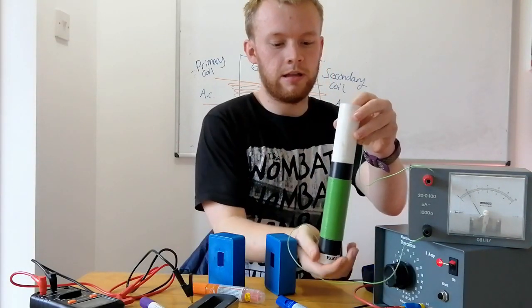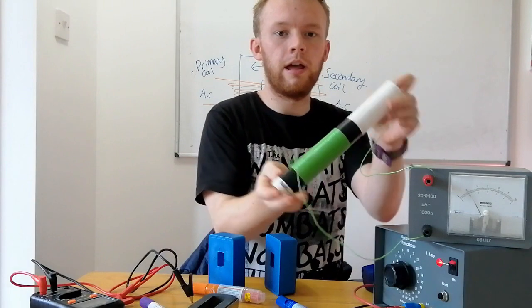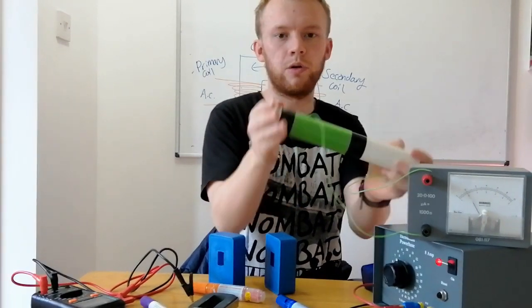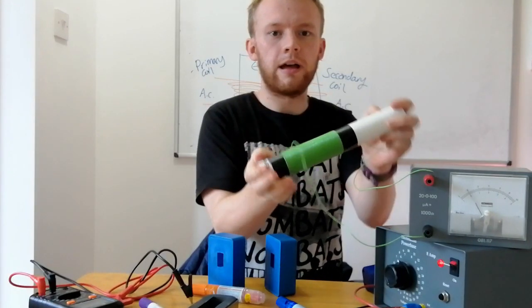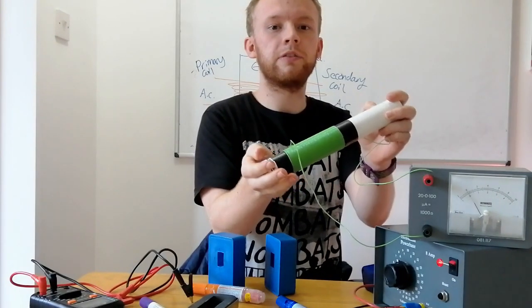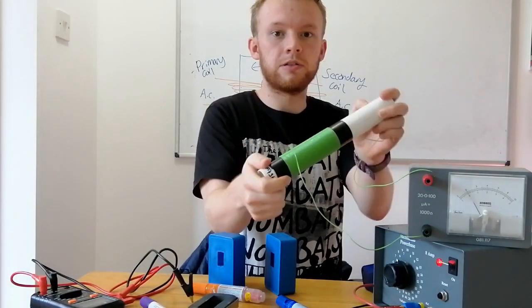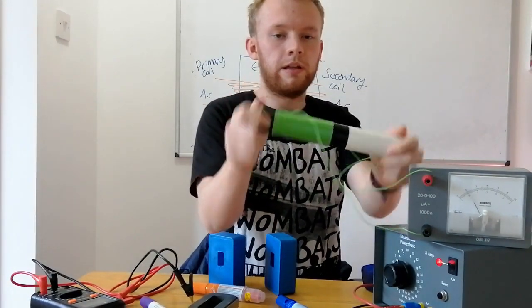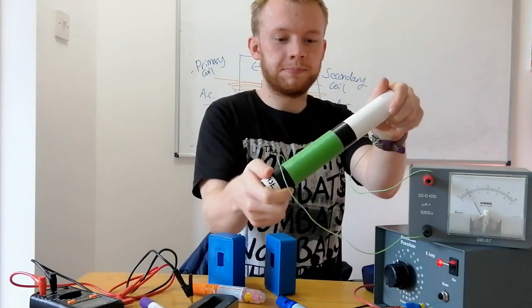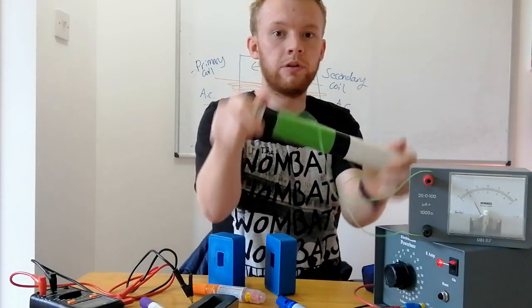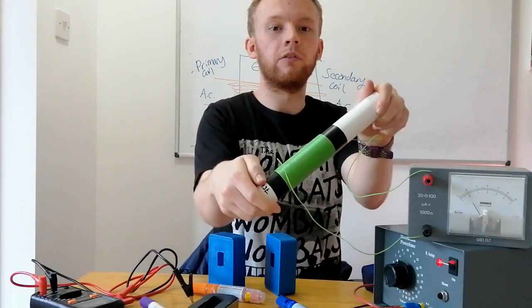And to demonstrate that, if I drop this magnet and keep moving it through the coil, then hopefully you'll see that there's a little bit of a flicker on the microammeter that I've connected up to this. The quicker that I move it through, the more pronounced that flick of the coil will be.